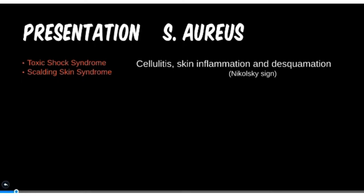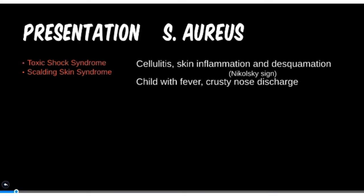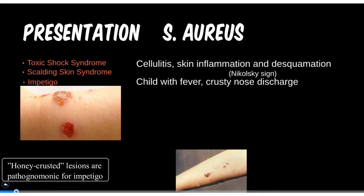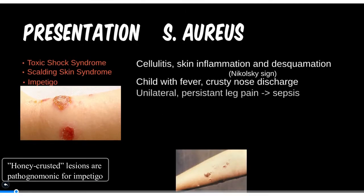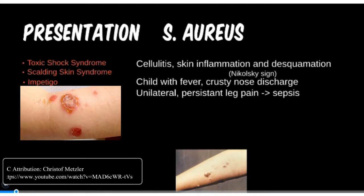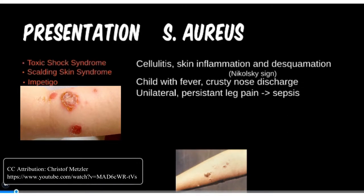Both on the boards and in the wards, you'll be able to easily separate these diseases based on patient history and demographics. Next we have a child with fever and crusty nose discharge — hopefully you're thinking of impetigo and recalling that this may be seen in one of the strep microbes as well.